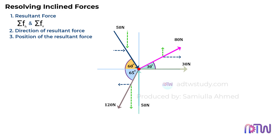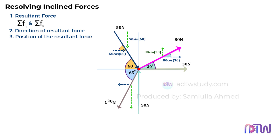Now let's calculate the forces for each component. For the 80 newton force, the horizontal component is 80 cosine 30 degrees, and the vertical component is 80 sine 30 degrees. For the 50 newton force, the angle made with the horizontal is 60 degrees, so the horizontal component is 50 cosine 60 degrees, and the vertical component is 50 sine 60 degrees. For the 120 newton force, the horizontal component is 120 cosine 65 degrees, and the vertical component is 120 sine 65 degrees.